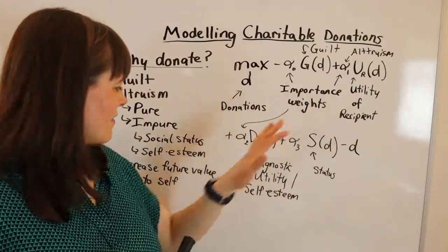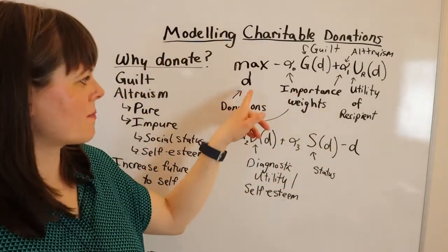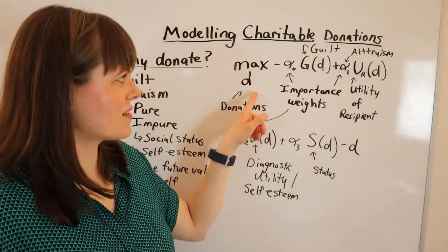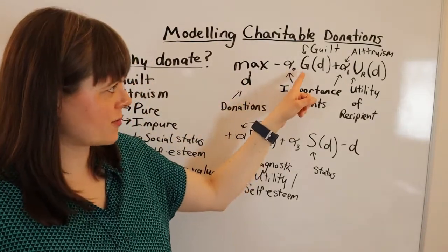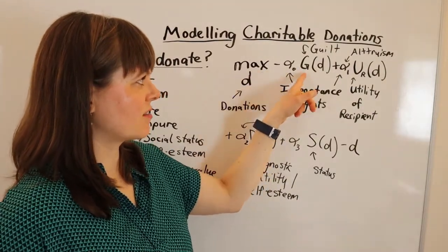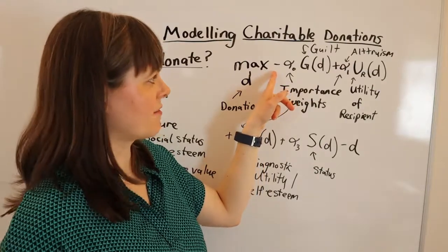So here we've got a model that's got many of these, not everything on this list, but most of them. So the choice variable here is donations, how much to donate. Our first term is going to be guilt. You donate in order to alleviate guilt, and of course because guilt is a bad thing, it's going to have a negative sign in front of it.